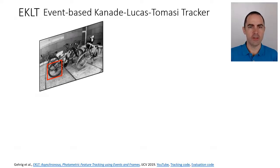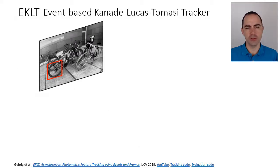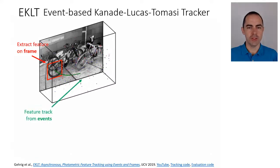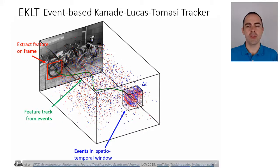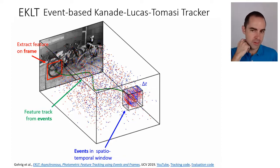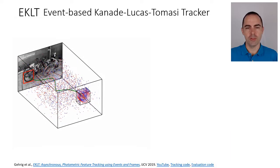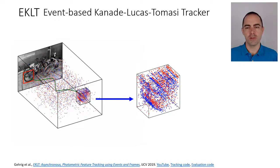Looking at how the algorithm works with a detailed animation: first, we detect an edge pattern to track — such as a corner or distinctive edge pattern — in a frame. This feature is then tracked in space-time using events. At some later time, we have tracked the feature to a new location and have a volume of events around that current location in a spatial-temporal window.